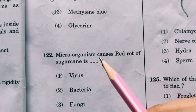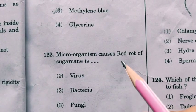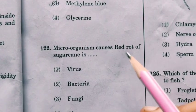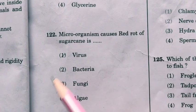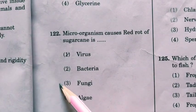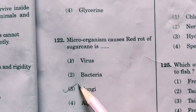Next question: which microorganism causes red rot of sugarcane? Red rot of sugarcane is caused by fungi.